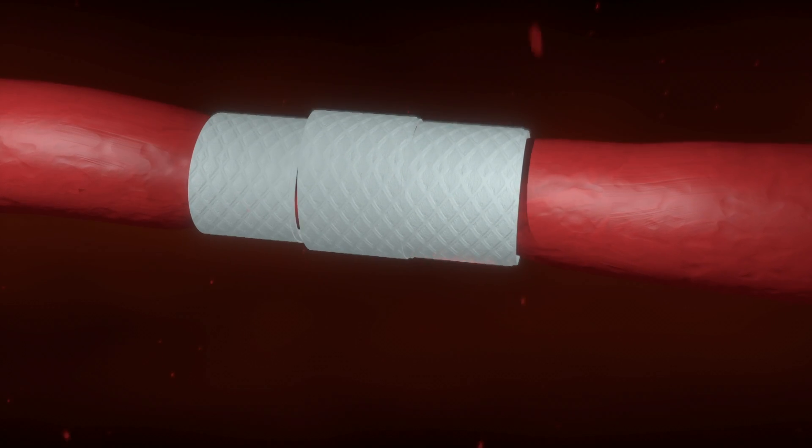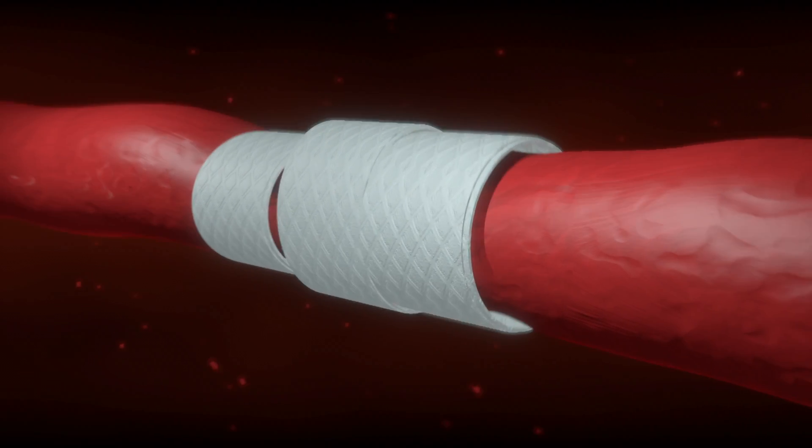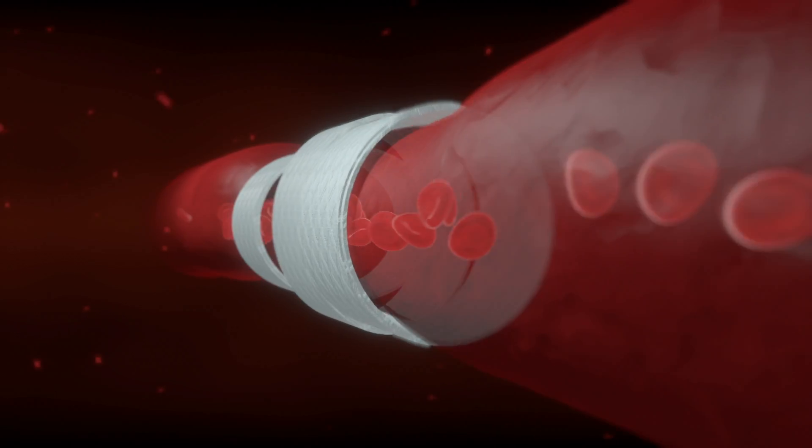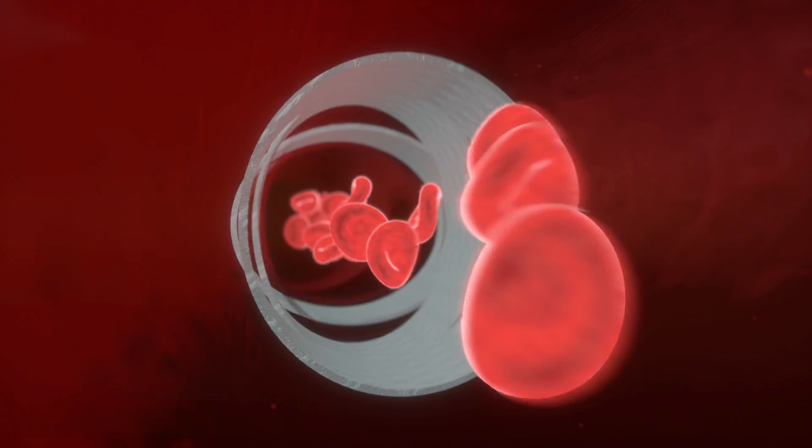The systems we know now have contact with the blood. We have valves, we have a propeller sometimes, and these devices can harm the blood cells. We call this hemolysis. With our system, we have no hemolysis because there is no contact at all with the blood. We are around the aorta, and furthermore, no valves in the system, which is quite simple afterwards to implement for the surgeon.